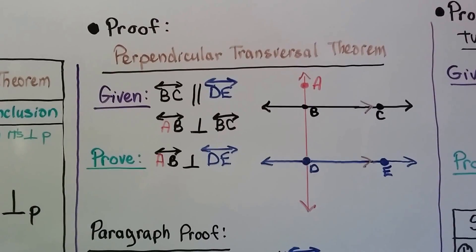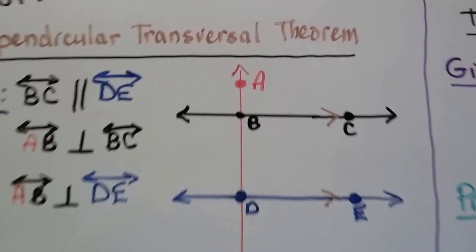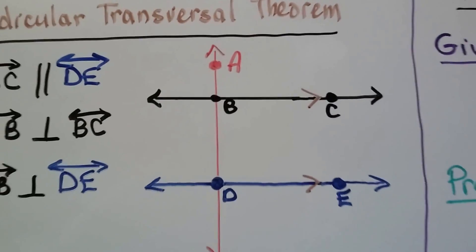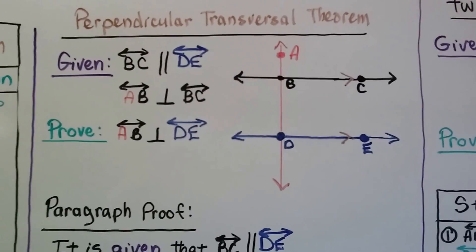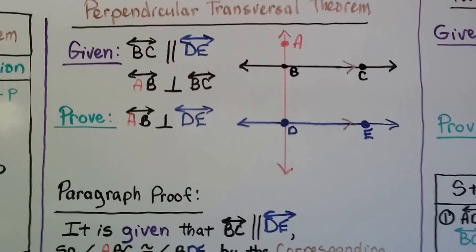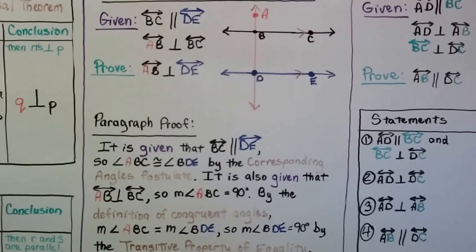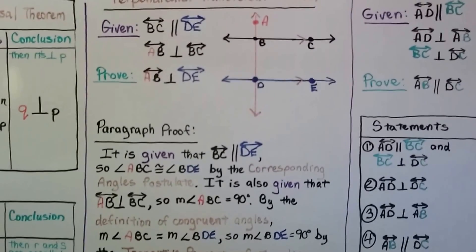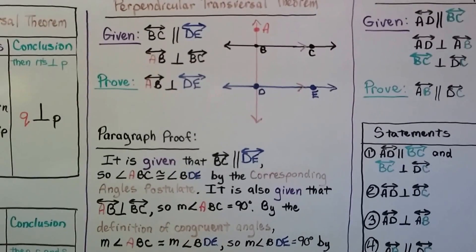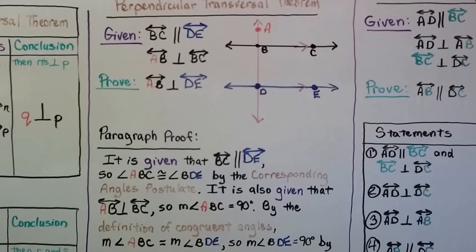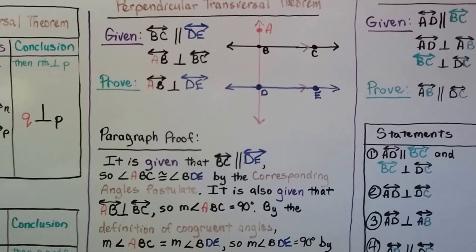It's also given that line AB — that little piece at the top — is perpendicular to the black line BC. We need to prove that AB is perpendicular to the blue line DE. Here's our paragraph proof. It's given that the black line BC is parallel to the blue line DE. So angle ABC is congruent to angle BDE by the corresponding angles postulate.